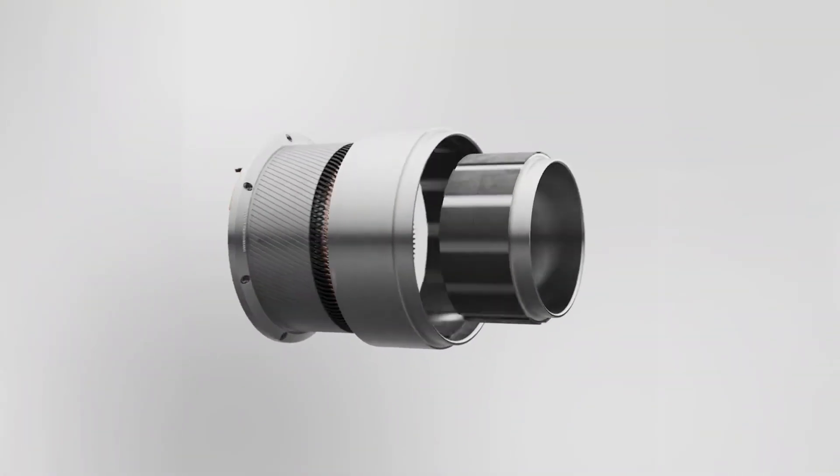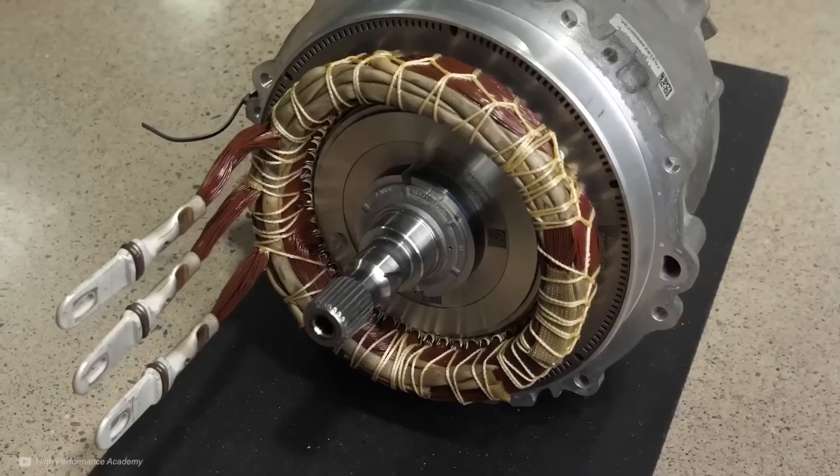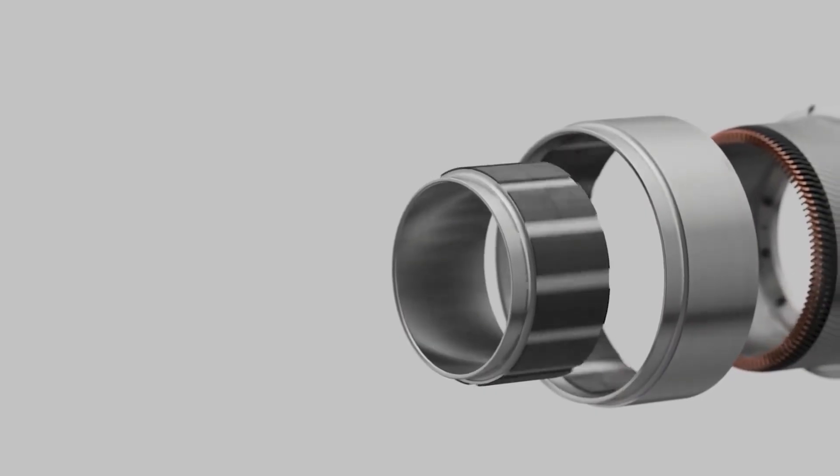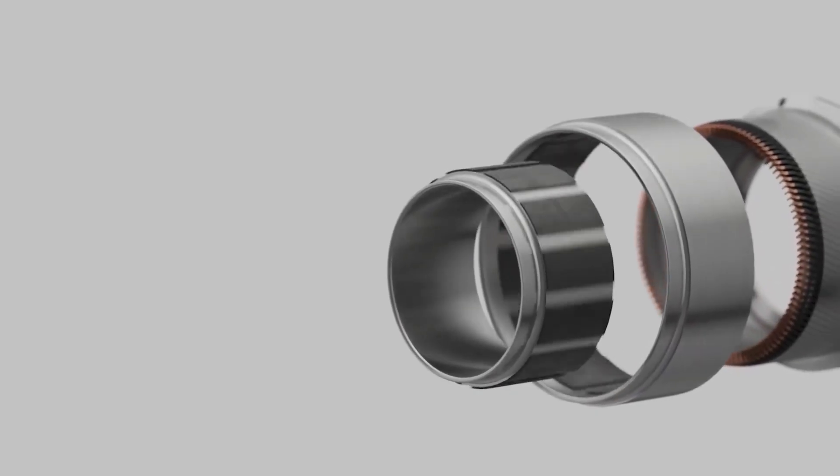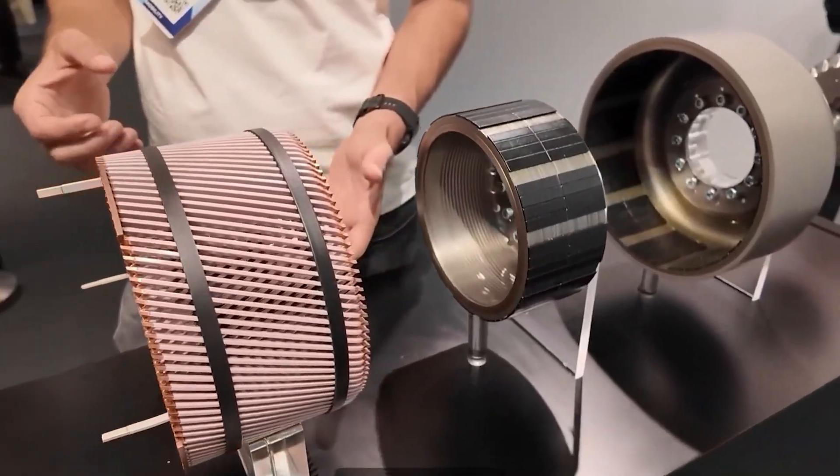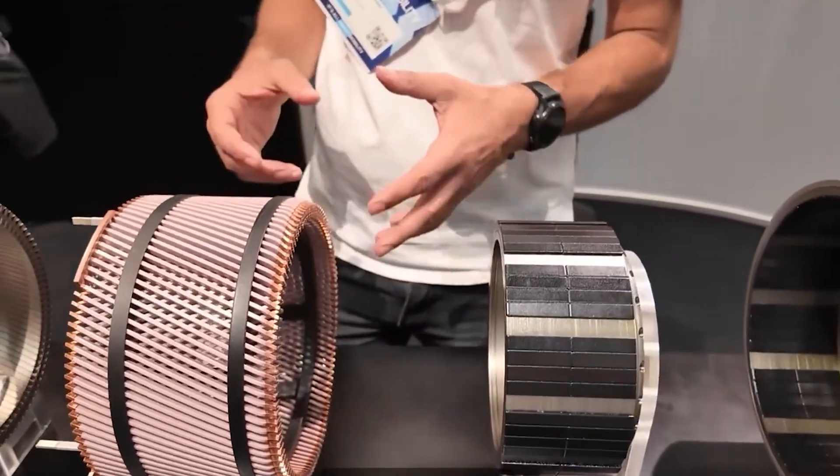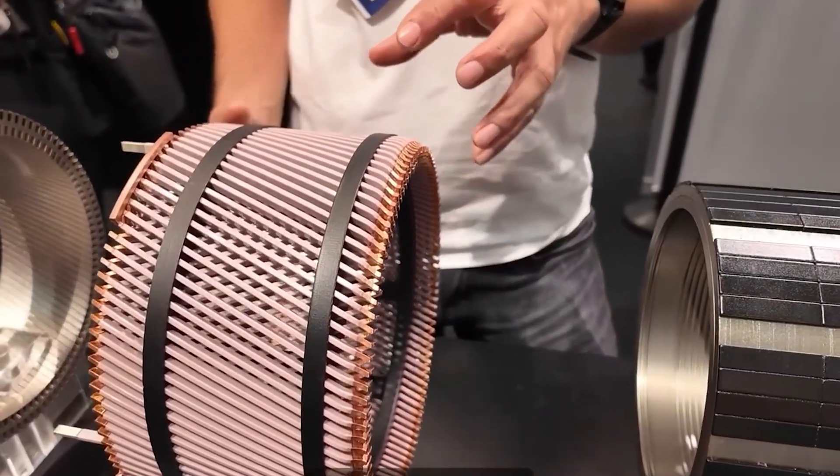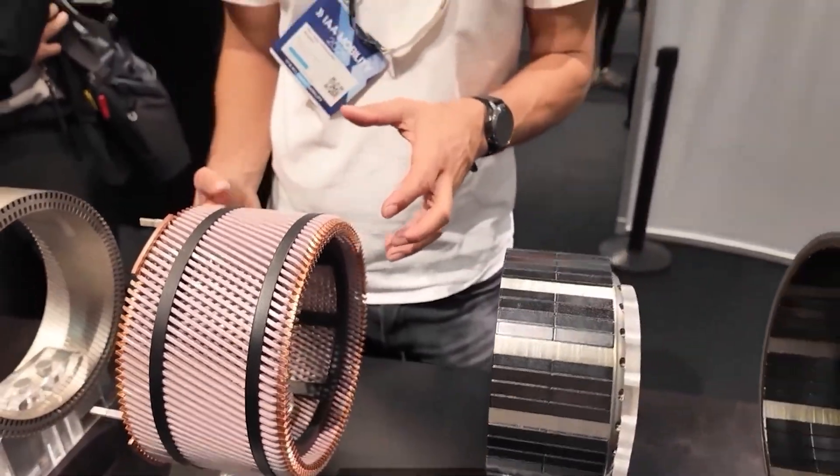The yoke cuts iron use by a huge margin, reduces size, and lowers losses. But once the yoke disappears, there is nothing left to stop the stator from twisting under magnetic forces or overheating under load. These two problems threaten to limit the entire concept, so DeepDrive needed a new idea that could replace the yoke's mechanical and thermal roles without adding weight or extra parts.